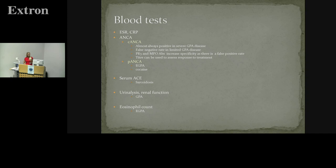If I have an index of suspicion, I do some screening blood tests: ESR and CRP, ANCA — C-ANCA is more useful in severe GPA, but only 90% of patients eventually seroconvert, so a negative C-ANCA does not exclude vasculitis. P-ANCA is more relevant in eGPA or cocaine. Elevated serum ACE in sarcoidosis. I always test for renal function and measure the eosinophil count.